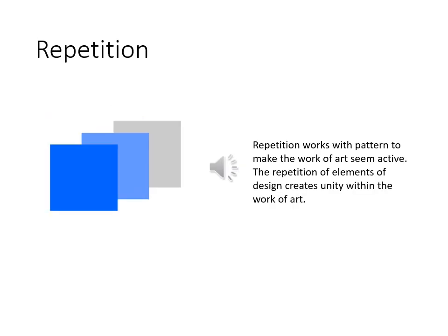The last principle of design is repetition. Repetition works with pattern to make the work of art seem more active, and the repetition of design elements creates unity within the work of art. This can be achieved by repeating one singular element, repeating a part of your composition, or repeating the entire composition once, twice, or three times to make it into a whole united design.